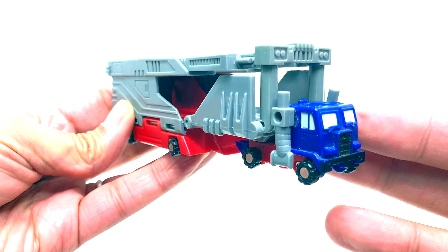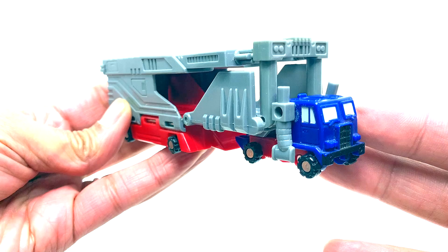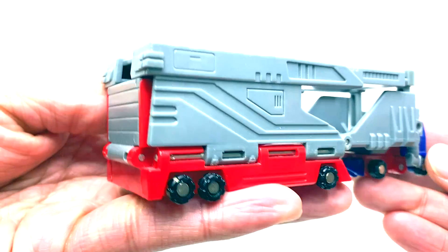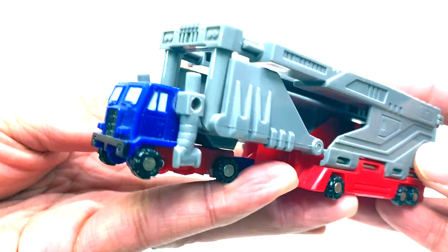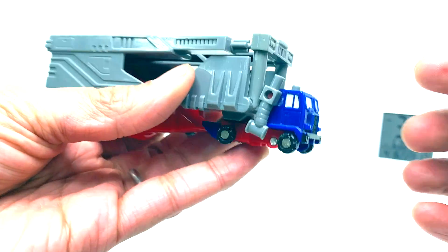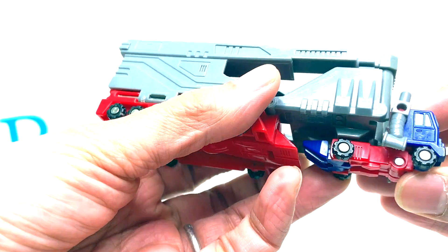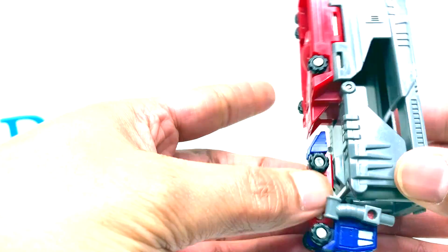It looks really cool. He's got a trailer, looks like Huffer or Pipes, looks like Optimus with a trailer but it's not, it's a micro master. This is G1 Overload.